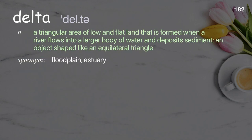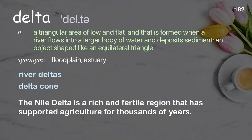Delta: A triangular area of low and flat land that is formed when a river flows into a larger body of water and deposits sediment; an object shaped like an equilateral triangle. The Nile delta is a rich and fertile region that has supported agriculture for thousands of years.